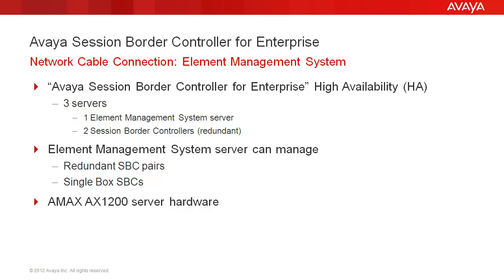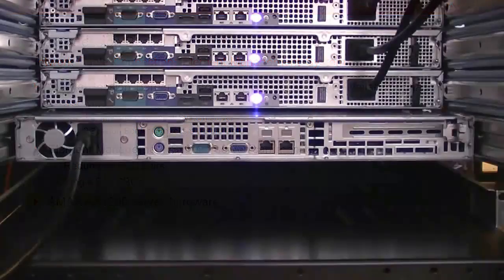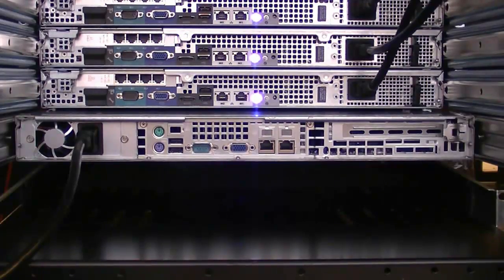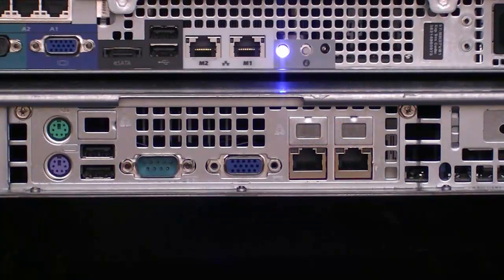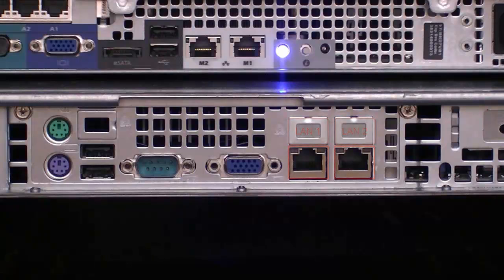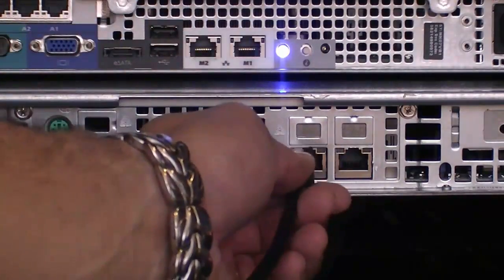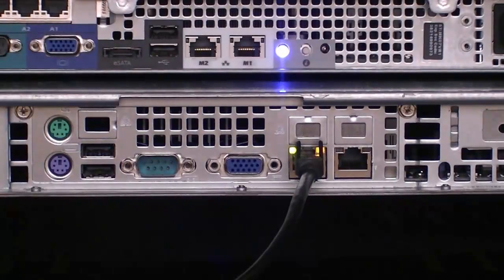This video shows the typical AMAX AX1200 Server Management Network Interface cable connection. The rear of the server has two 32-bit Gigabit Ethernet ports. They are not labeled but are identified as LAN1 and LAN2 from left to right. Connect the management network to the LAN1 port. In the Linux command line interface, the LAN1 port is identified as ETH0.